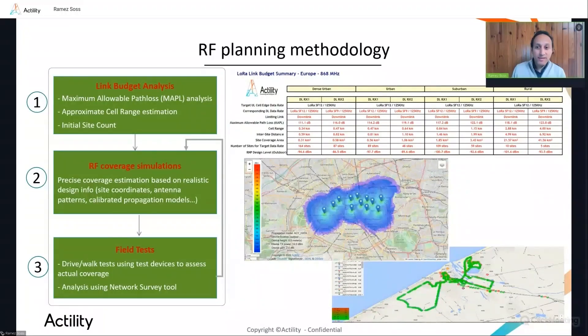And once your gateways are deployed, the third step consists of doing field tests to determine the real coverage of your network and compare them with prediction heat maps provided in step two. ThinkPark provides you with the network survey tool to easily analyze your walk test data and visualize the different RF metrics on a user-friendly interface.